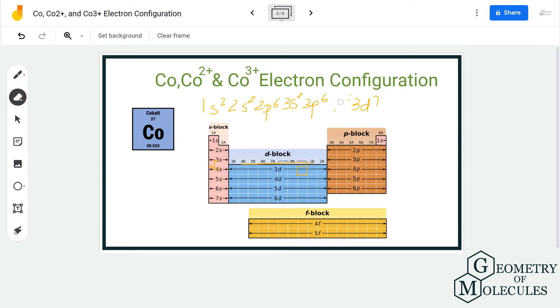We generally use the nearest noble gas of the periodic table to make it easier. So we write [Ar] 4s² 3d⁷, or we can reverse it as [Ar] 3d⁷ 4s². This is the electron configuration for Co.